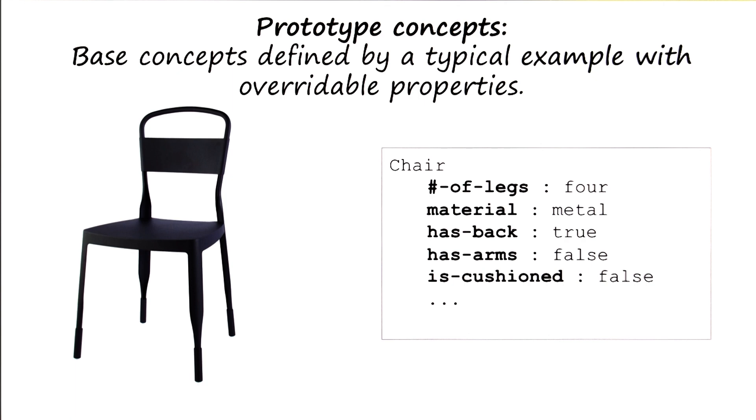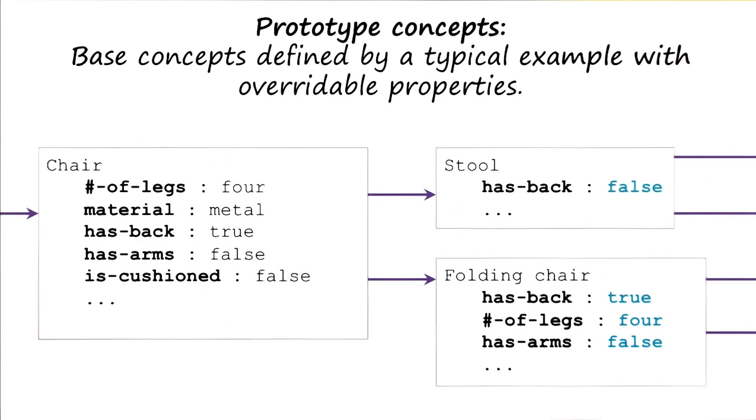Despite the fact that we can override these properties, we do still have a notion of prototypical chair. So the relationship between concepts and frames is quite close. Recall that when we were talking about frames, we were also talking about inheritance and default.